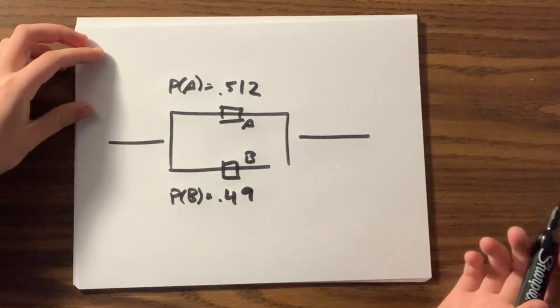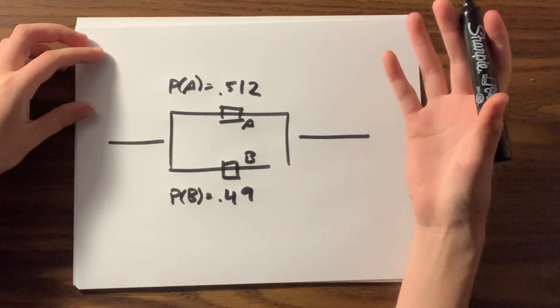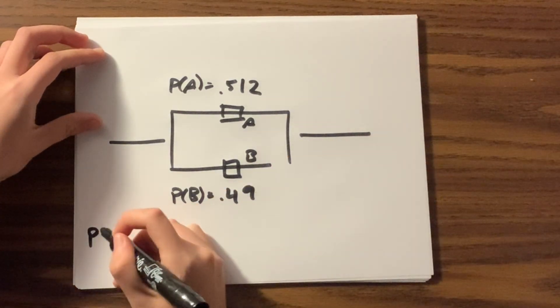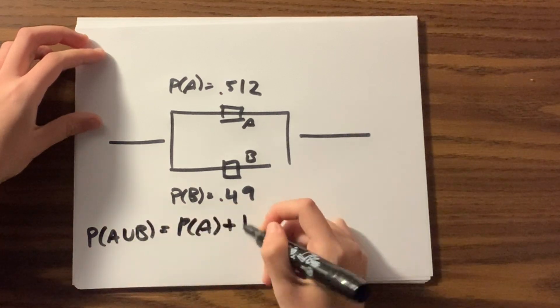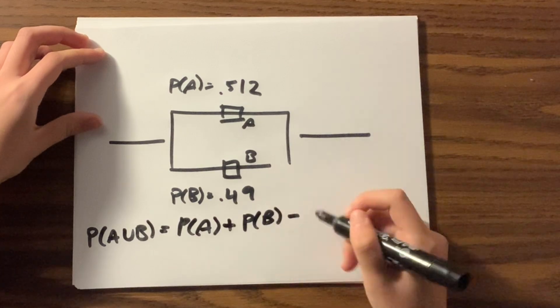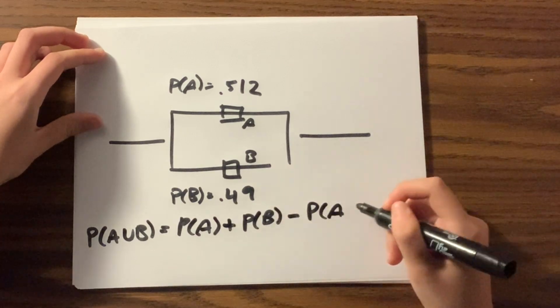We can say that the probability of A union B is equal to the probability of A plus the probability of B minus the intersection of the probability of A and B occurring.